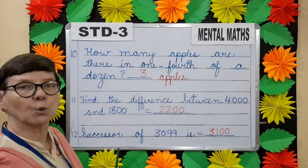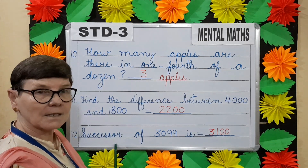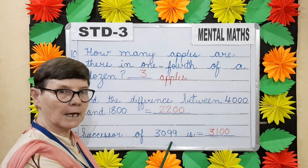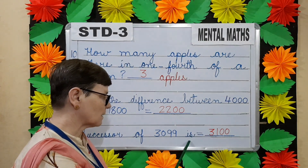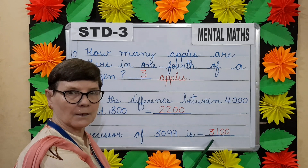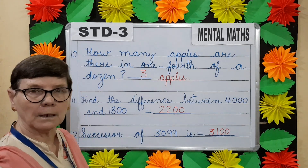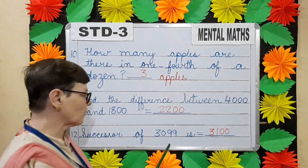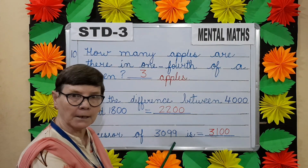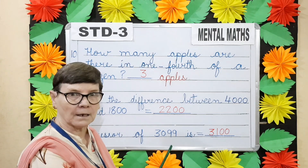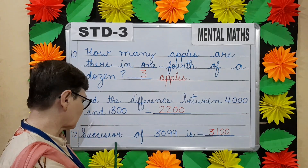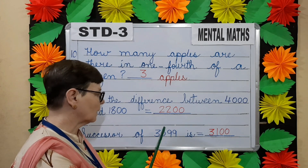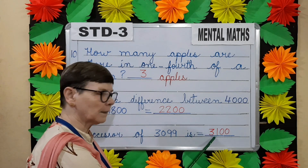Question number twelve. Successor of three thousand ninety-nine equals dash. Successor means what comes after. To make it easy children, what comes after ninety-nine? One hundred. So the successor of three thousand ninety-nine is three thousand one hundred.